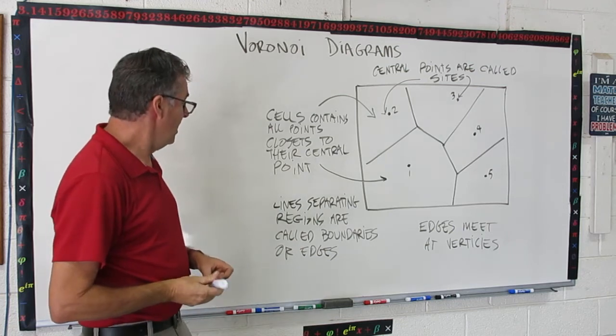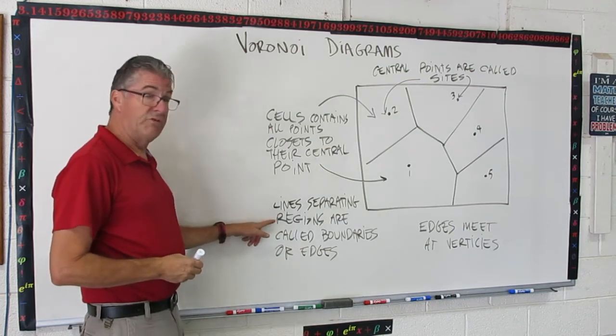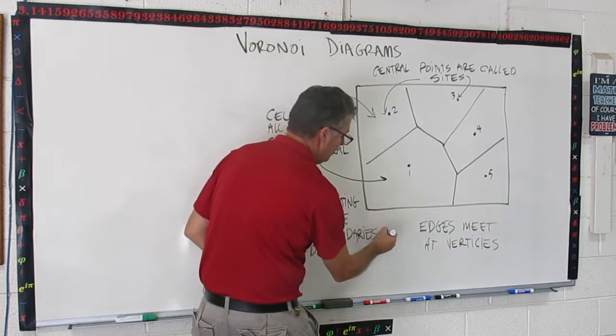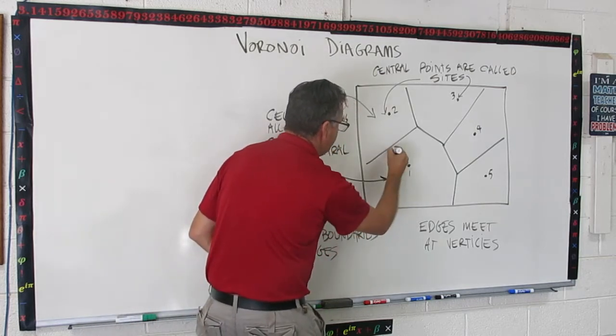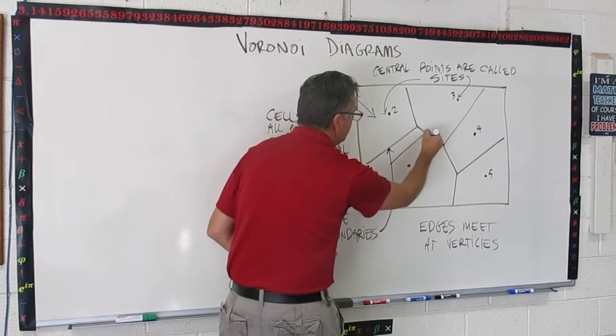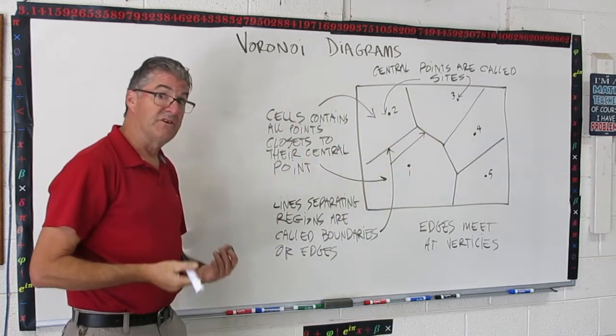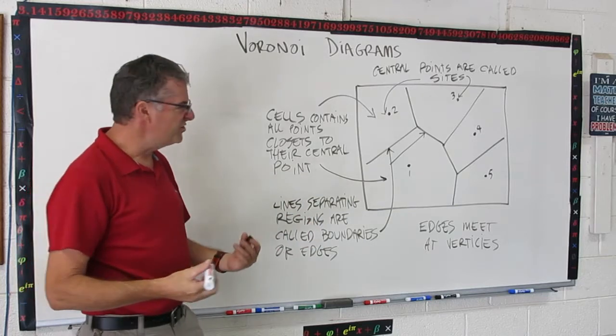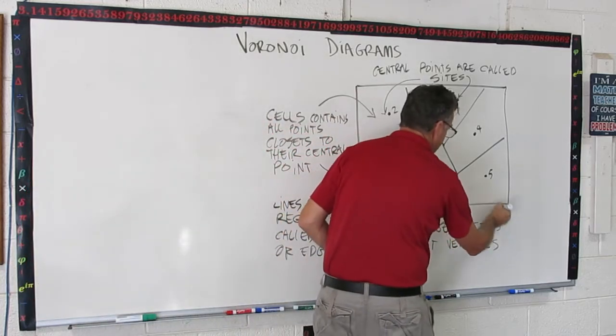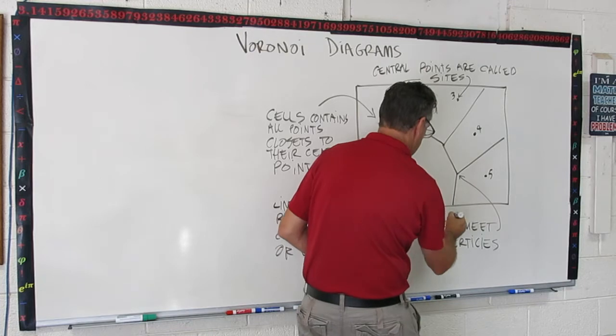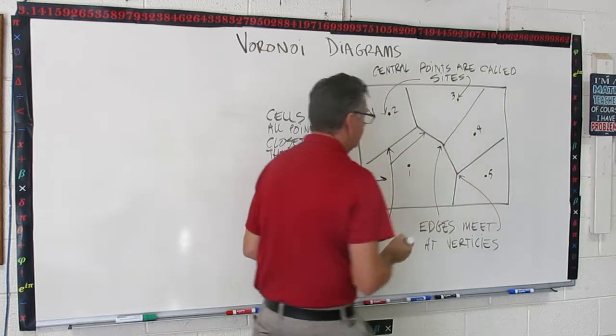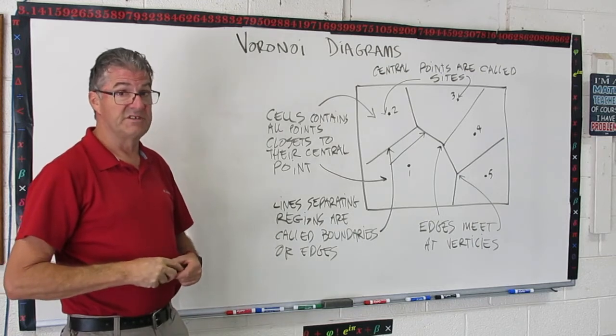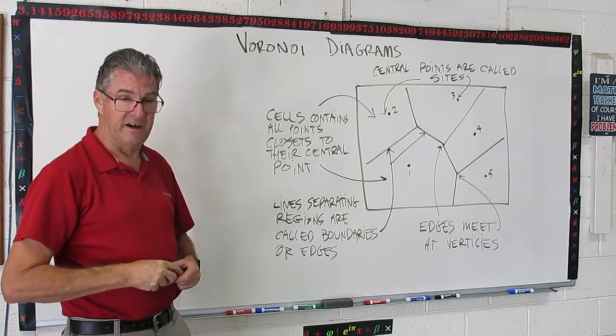Now let's get a little bit more specific. Central points actually have a name. They're called sites. So that's a site. That's a site. And we have three more in this diagram. Okay, so that was the second vocab. Lines separating regions are called boundaries or edges. So that would be like perhaps that boundary or that boundary. Those are boundaries or edges. And then lastly, edges meet at little corners called vertices. So that's a vertices and that's a vertices. And all of these components are going to come into play when we discuss Voronoi diagrams.